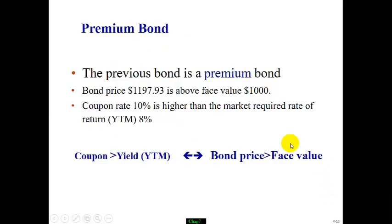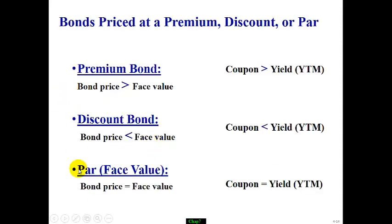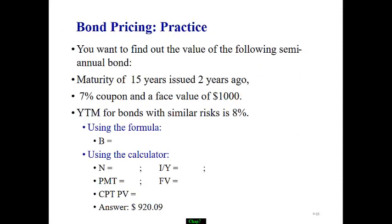As you notice, in this case the offered coupon rate of 10% is higher than the market yield of 8%. We can summarize: a premium bond implies coupon rate is higher than yield, while a discount bond means coupon rate is below yield to maturity. I want you to pause and practice on these bond pricing examples.